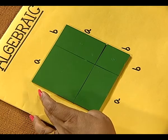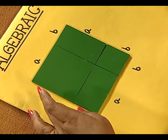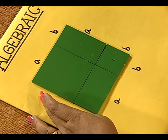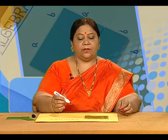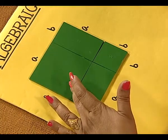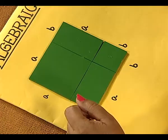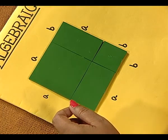So we have a square here of length a plus b. The area is a plus b whole square. So the area of this square will be a plus b whole square.